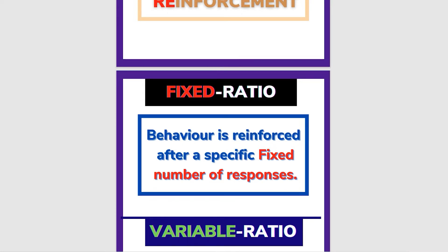The four different schedules of reinforcement: number one is Fixed Ratio. Fixed ratio — behavior is reinforced after a specific, fixed number of responses. For example, we train a dog and set a fixed number of responses to get reinforcement.